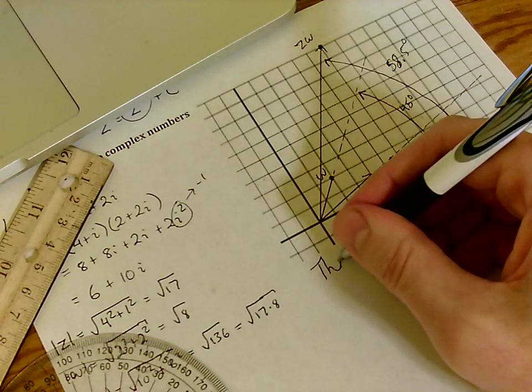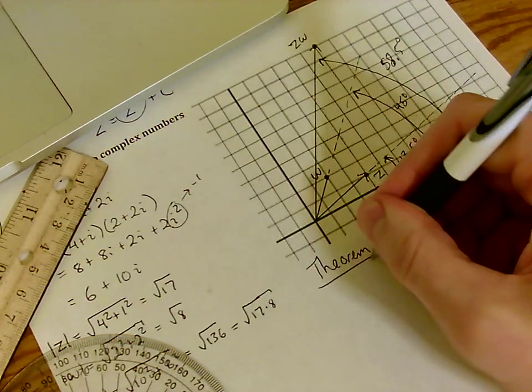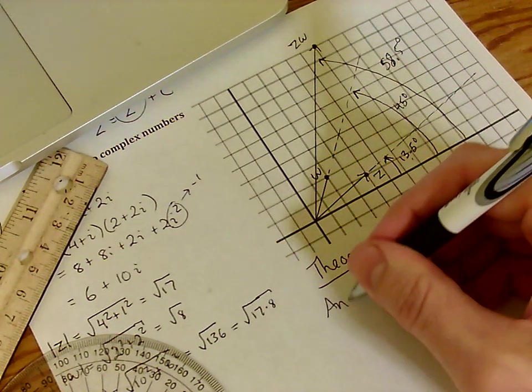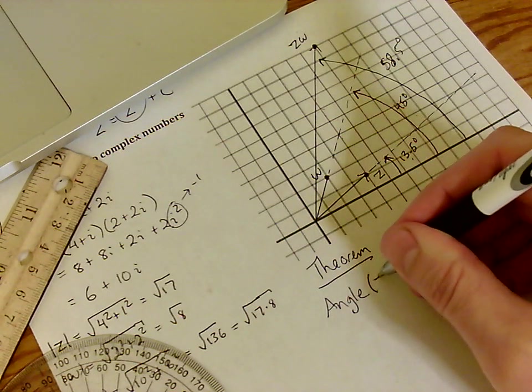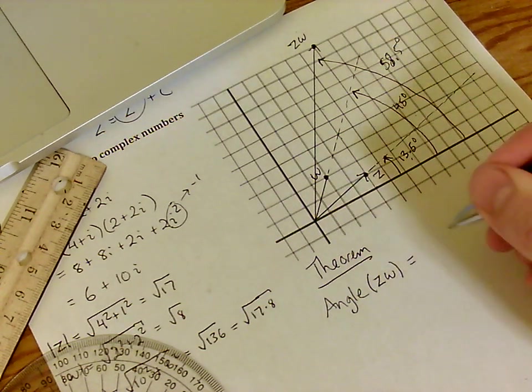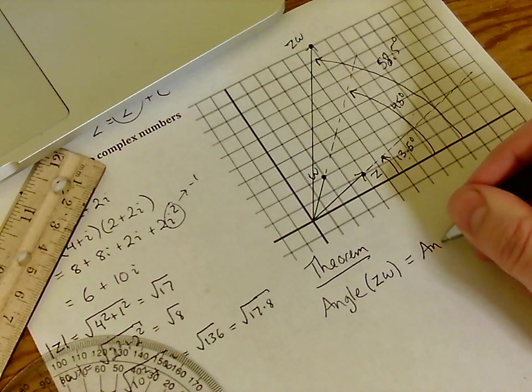Second little theorem. If you look at the angle of the product of two complex numbers, that's simply the sum of the angles of the individual complex numbers.